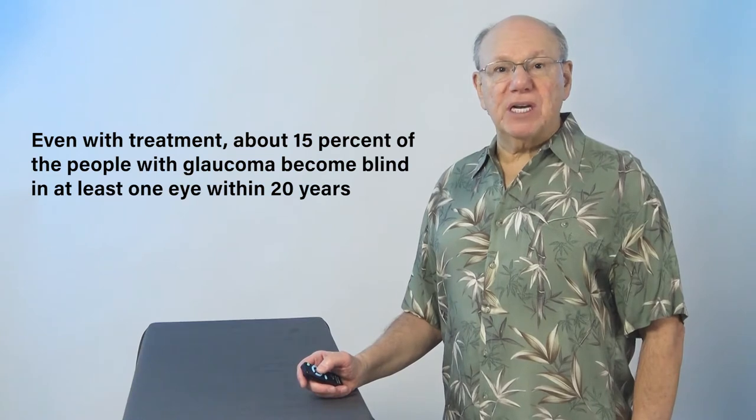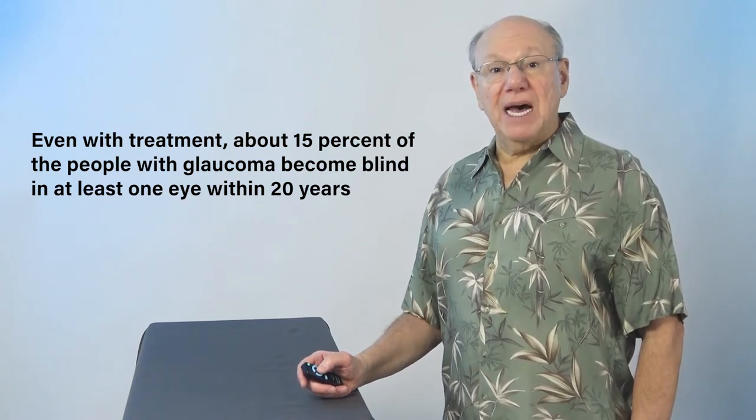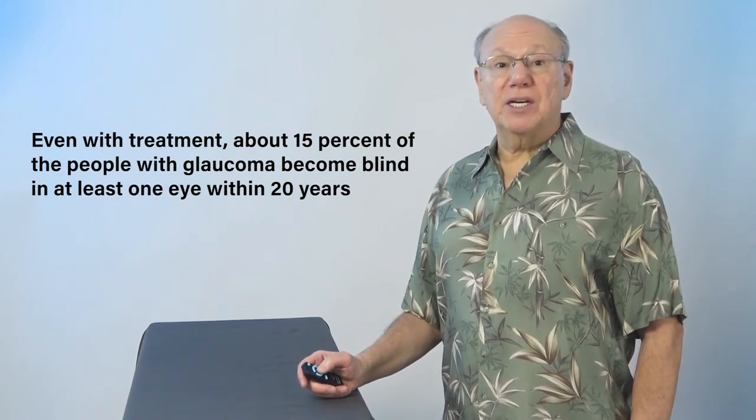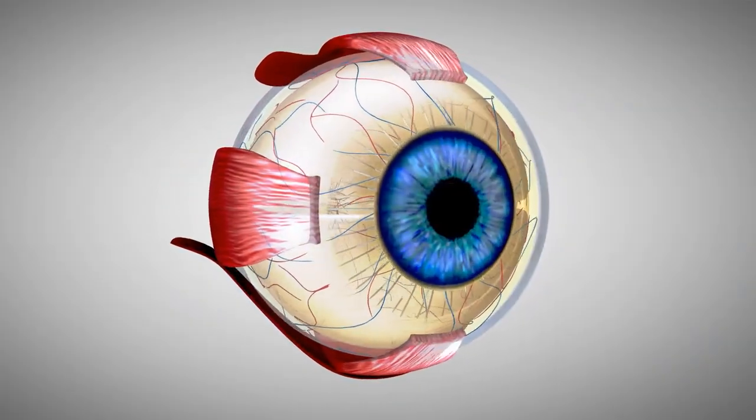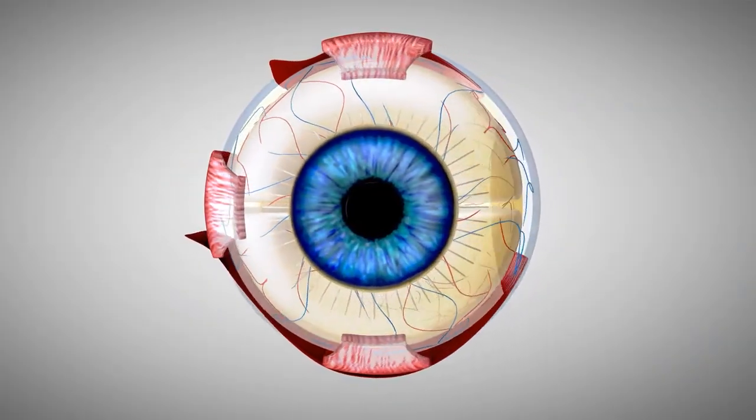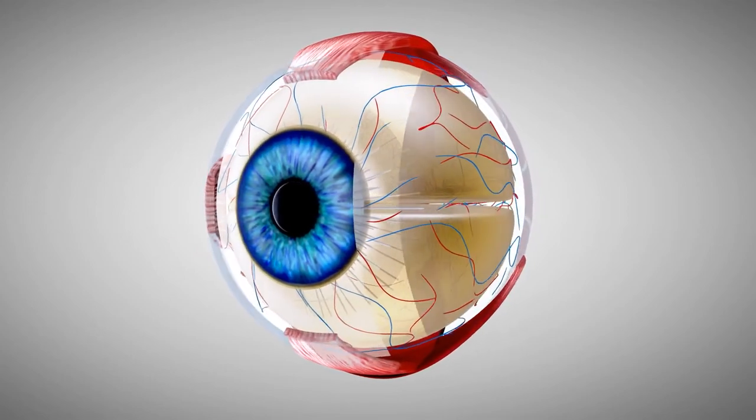Even with treatment, about 15% of the people with glaucoma become blind in at least one eye within 20 years. A recent study showed that activating certain acupuncture points significantly reduced eye pressure in a group of glaucoma patients. Adding acupuncture point stimulation to your eye care program can keep your eye pressure down and just might save your vision.